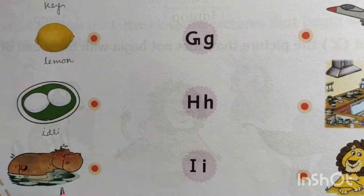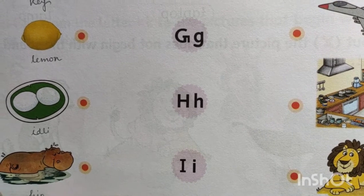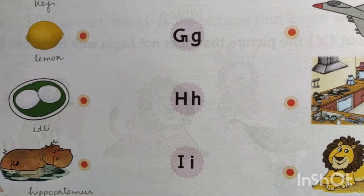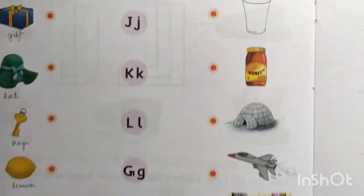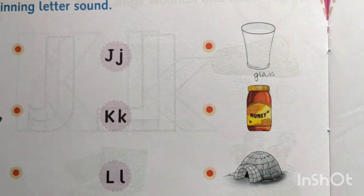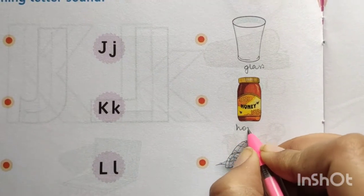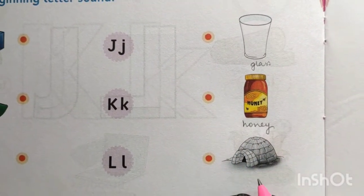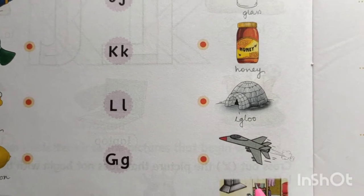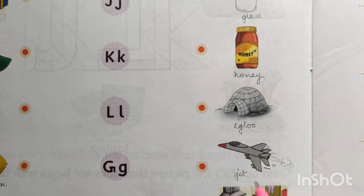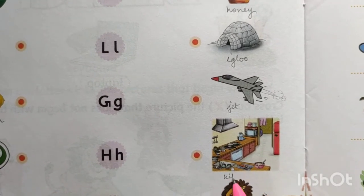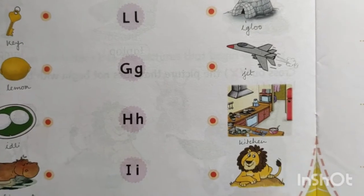This is hippopotamus — H-I-P-P-O-P-O-T-A-M-U-S, hippopotamus. On the right side: this is glass — G-L-A-S-S. This is honey — H-O-N-E-Y, honey. This is igloo — I-G-L-O-O, igloo. This is jet — J-E-T, jet. This is kitchen — K-I-T-C-H-E-N. And this is lion.